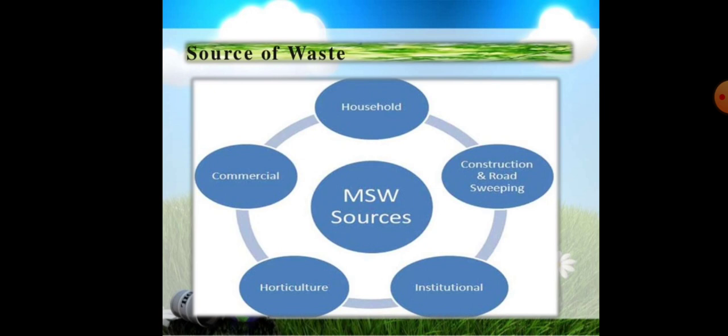The sources of municipal solid waste include household waste — waste coming from households. Then construction and road sweeping — waste generated from roads or other construction activities. Also institutional sources, horticulture, and commercial sources. These all are the sources of solid waste.